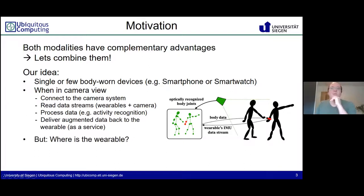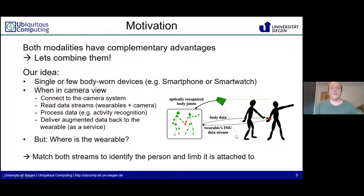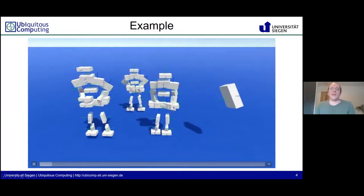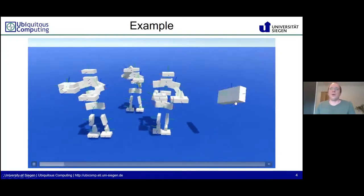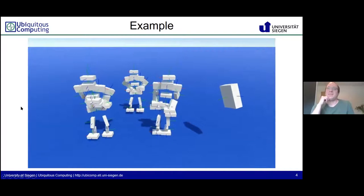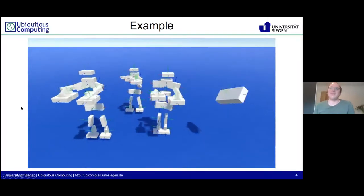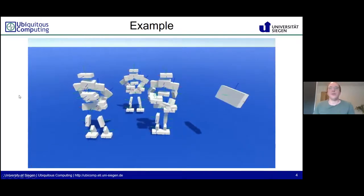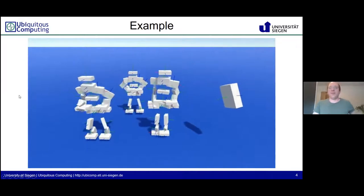But there's a problem. We don't know where the wearable is. It could be on one limb here, or on a different limb, or on a different user. This is what our work is about: matching both streams to identify the person and the limb the wearable is attached to. Here I have an example with a Kinect camera recording and an IMU worn by one of the users — can you tell where the sensor is? It's not easy. The IMU is worn here on the right wrist of this user, but once you know it, it's easy. When you don't know, it's not.